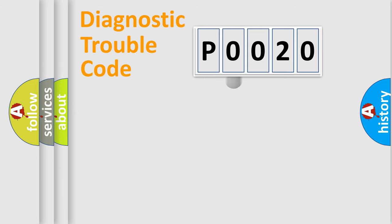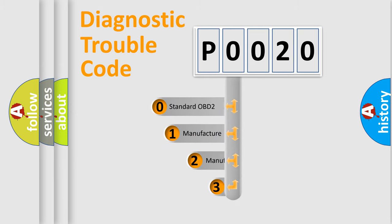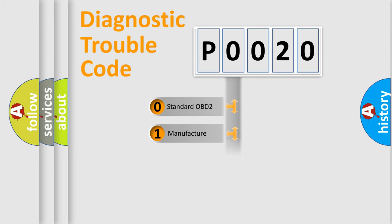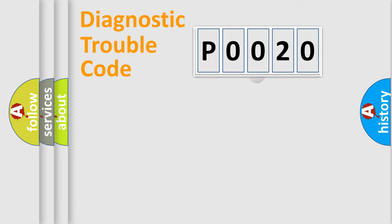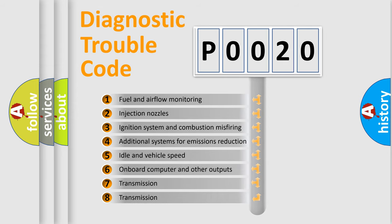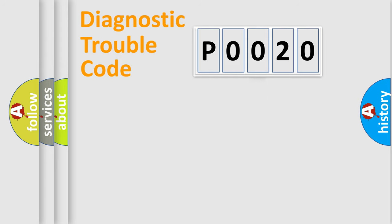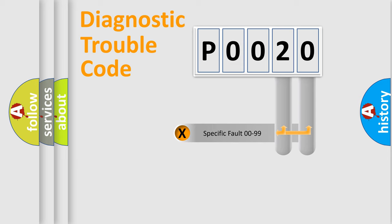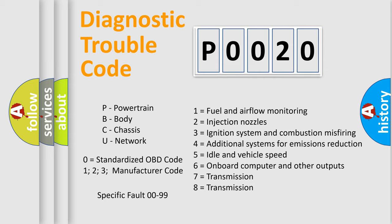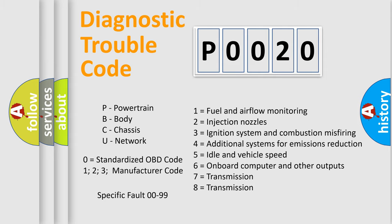This distribution is defined in the first character of the code. If the second character is expressed as zero, it is a standardized error. In the case of numbers 1, 2, or 3, it is a manufacturer-specific error expression. The third character specifies a subset of errors, and this distribution is valid only for the standardized DTC code. Only the last two characters define the specific fault of the group.